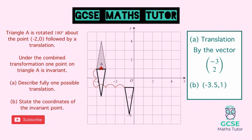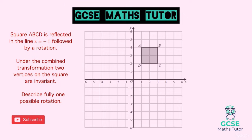That's one type of question where we've found an invariant point, though you could find different invariant points for this question. Now let's look at one final question. Square ABCD is reflected in the line x equals −1, followed by a rotation. Under the combined transformation, two vertices on the square are invariant — we need to describe fully the possible rotation.